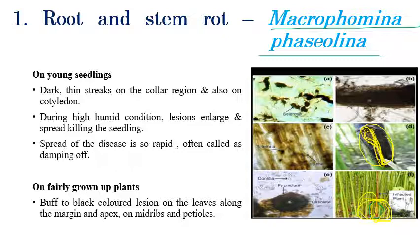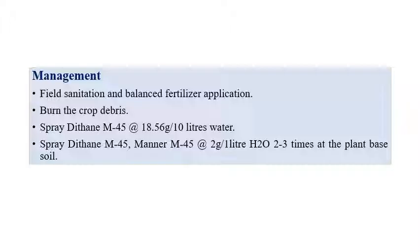In grown-up plants, black color lesions can be seen on the leaves, on the margins, and on the mid-ribs and petioles. Macrophomina phaseolina produces minute black sclerotia, which are resting spores and serve as a characteristic symptom of this disease.